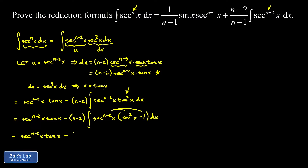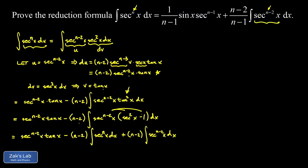In the next step we distribute and split into two integrals. The first gives minus n minus two times the integral of secant to the nth of x dx. The second term has secant to the n minus two with a minus sign, but when we apply the constant from in front of the entire integral, the negatives cancel and we get plus n minus two times the integral of secant to the n minus two of x dx.